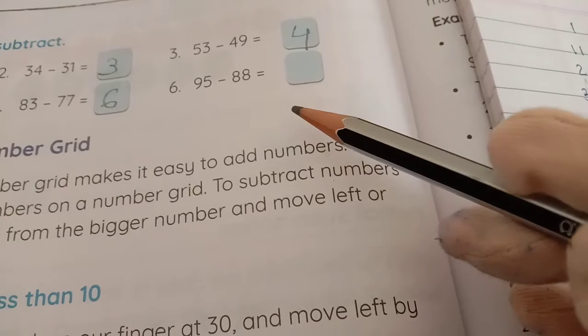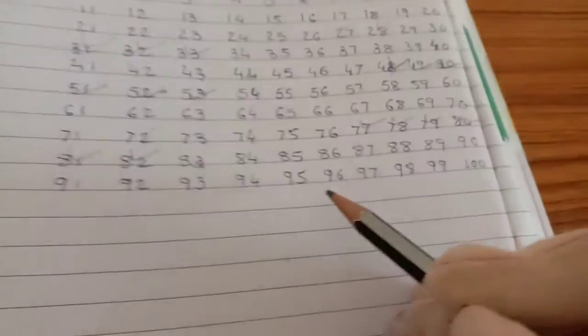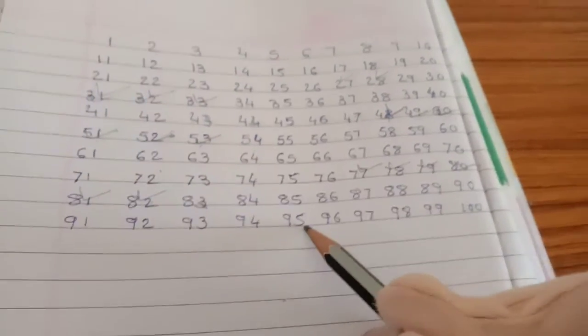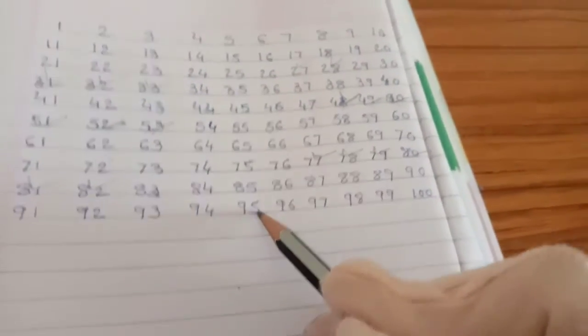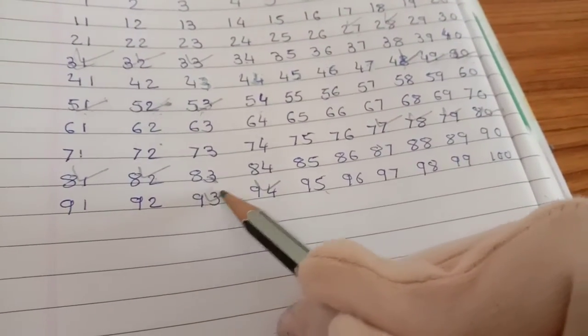Now next 95 minus 88. Okay, 95 minus 88, so we start 95 and stop 88. We go back 95 to start 94, 93, 92,